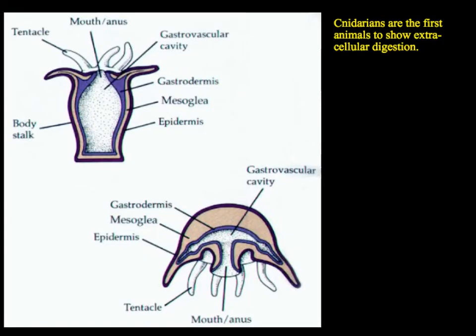With this group, they have something called the gastrovascular cavity. This means that they actually bring their food in after they capture it, secrete enzymes, and those enzymes digest the food in that gastrovascular cavity — it's like a primitive stomach. They're the first group to show extracellular digestion, and it's found in both the polyp form and the medusa form.